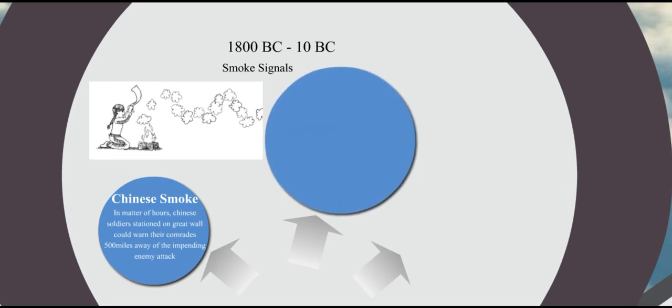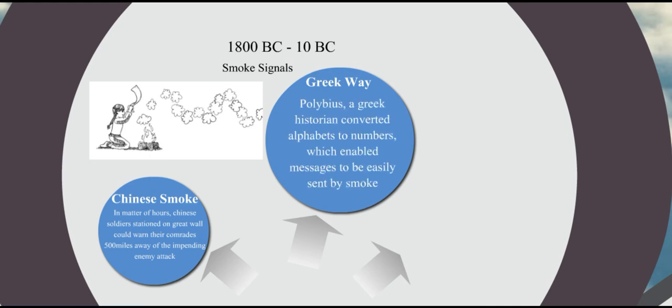After that, centuries later, Greeks modified it to a meaningful form. A Greek historian converted the alphabets to numbers which enabled messages to be sent by smoke. For example, for sending help, they could send H for one puff of smoke, E for two puffs of smoke, and so on.